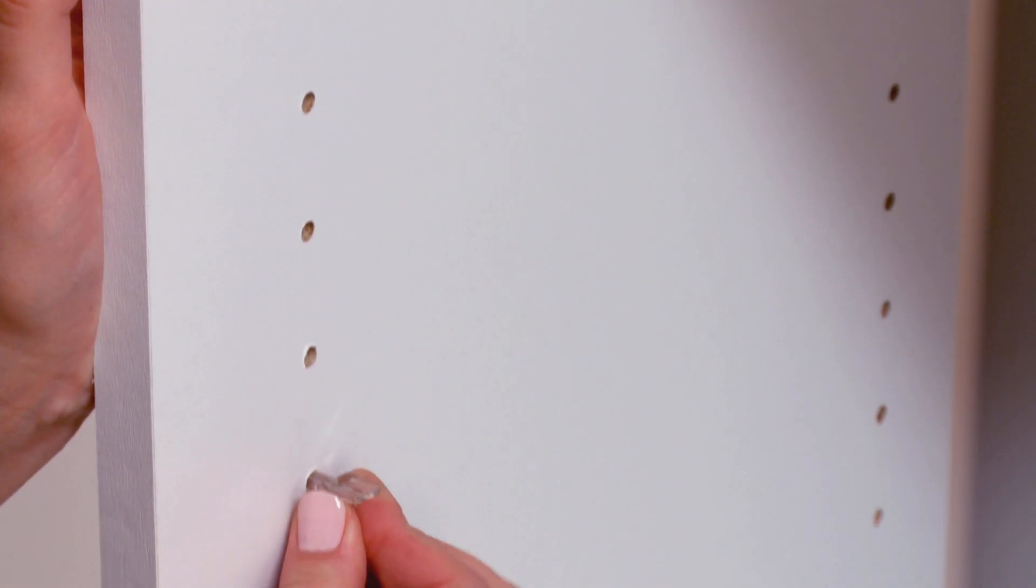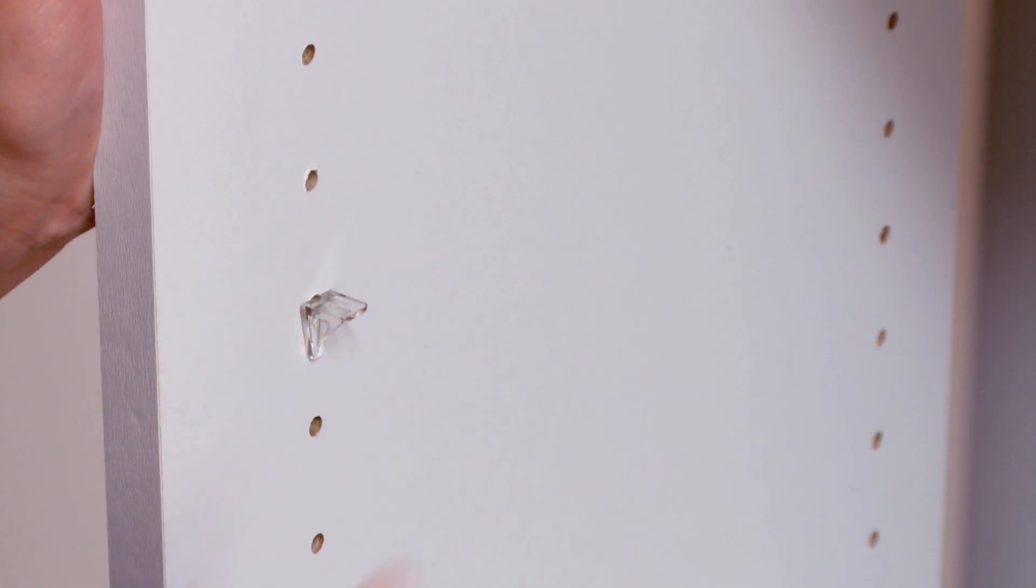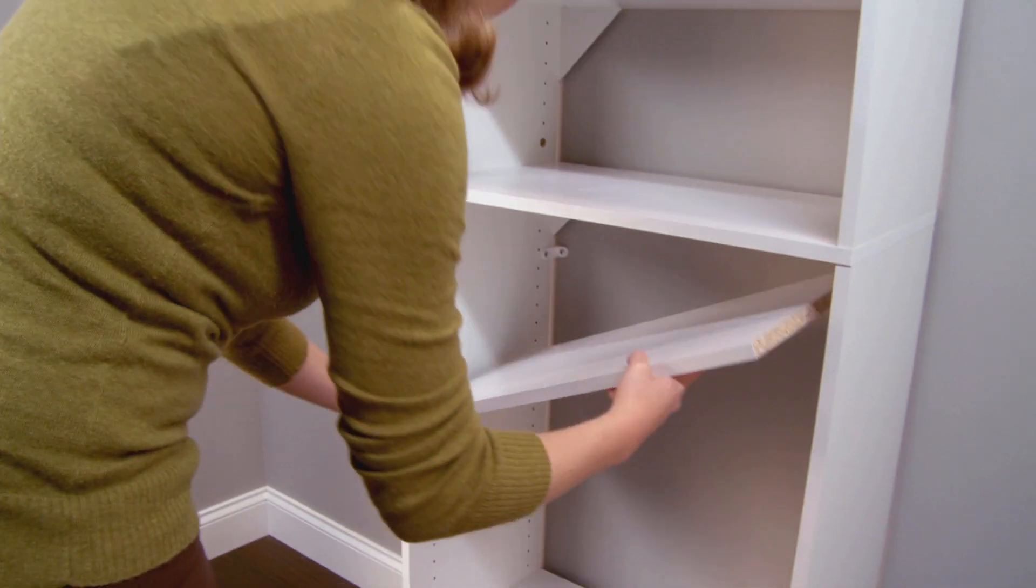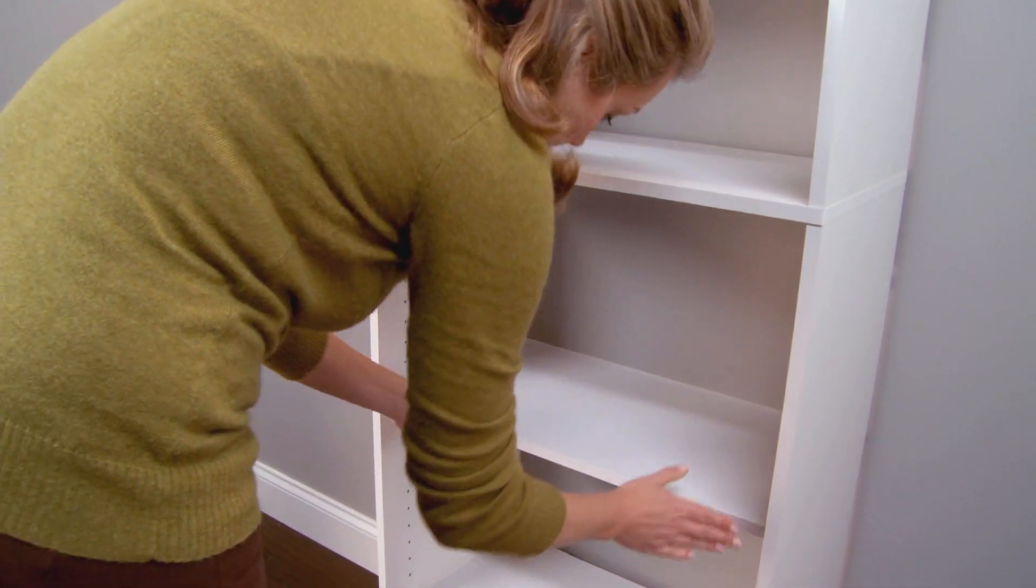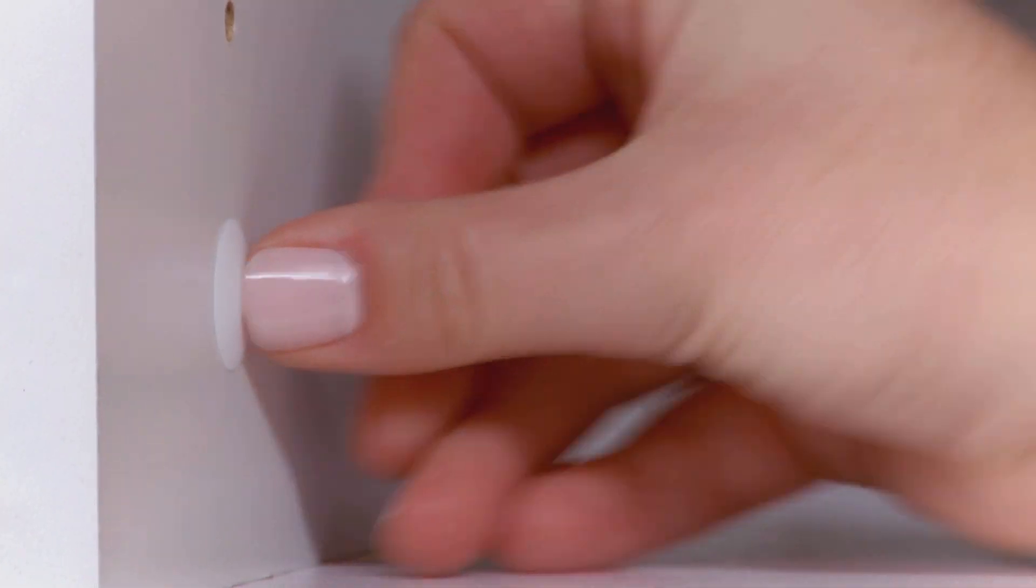Push the shelf supports into the holes at the desired locations for your shelves. Place the adjustable shelves onto the shelf supports. Push the covers into the open holes at the bottom of each unit.